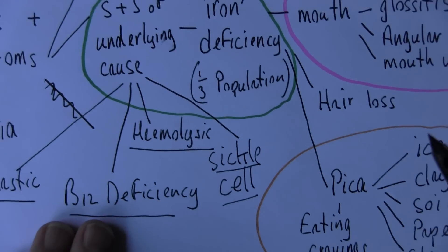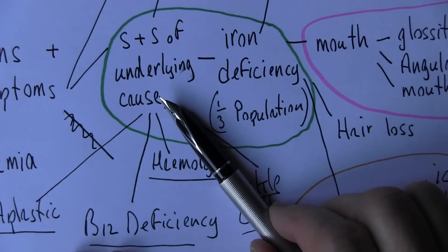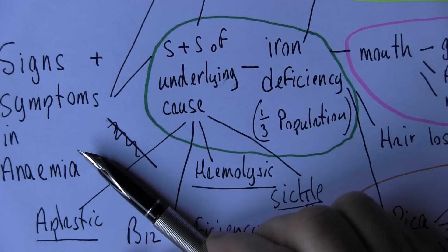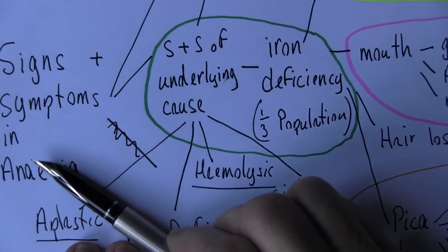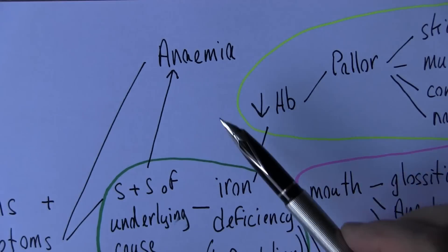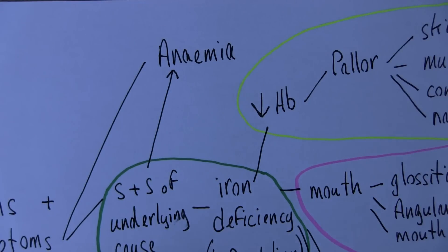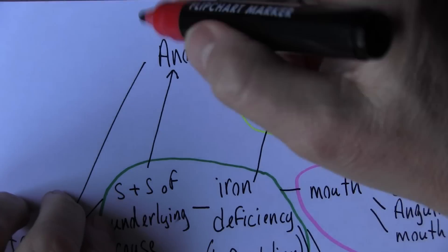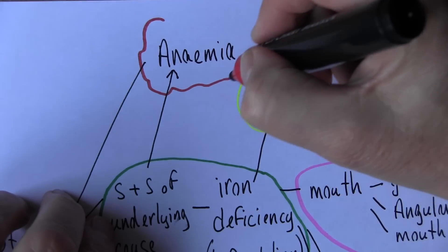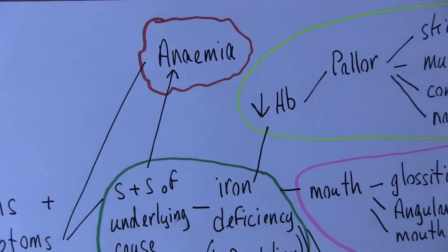So, having looked at the signs and symptoms of the underlying cause, in the next video we want to think about the signs and symptoms of the anemia specifically. The signs and symptoms caused by the reduced oxygen carrying capacity of the blood. Thank you.